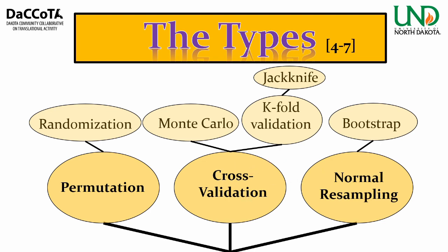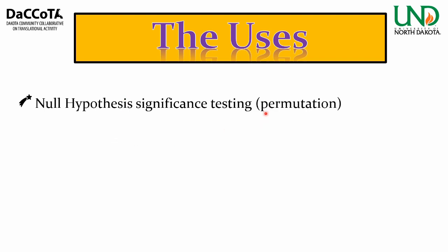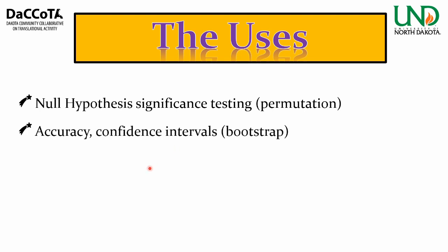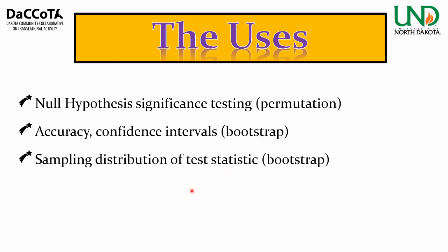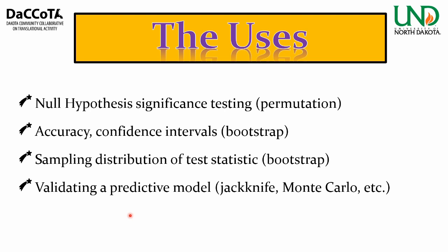Under uses of resampling, some of the biggest are: null hypothesis significance testing, especially through permutation; accuracy or confidence intervals of metrics or statistics, where bootstrap is really good; sampling distribution of a test statistic, where bootstrap is a particularly good example; and validating predictive models, especially with k-fold validation, jackknife, or Monte Carlo. Monte Carlo is specifically used for estimating density, approximating a quantity, or optimizing a function.